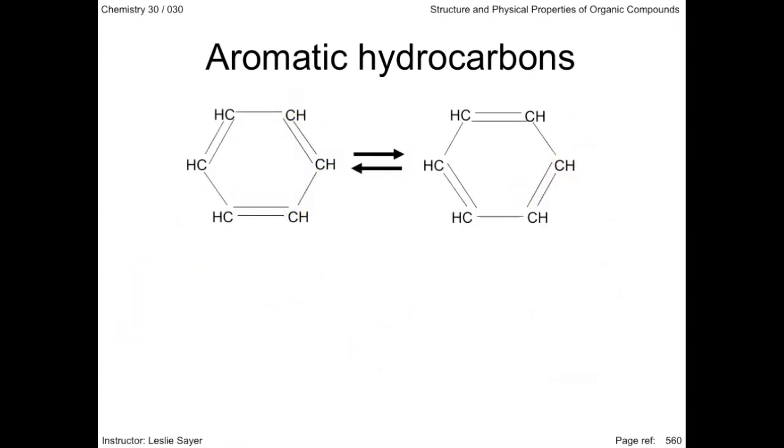Some theories centered around the notion that benzene was a resonance hybrid of two structures. You've seen this before in Chemistry 20 when a compound exists in nature as one of two or more states, and its chemical properties are based on a combination of these states.